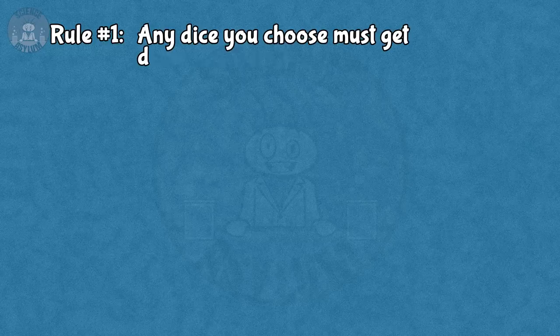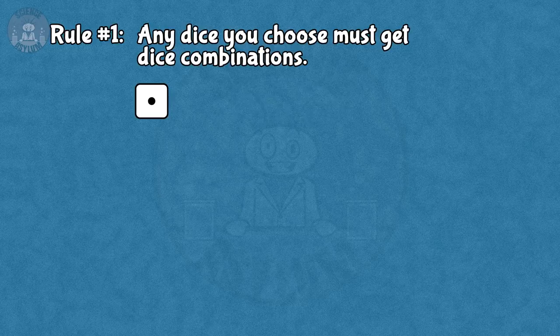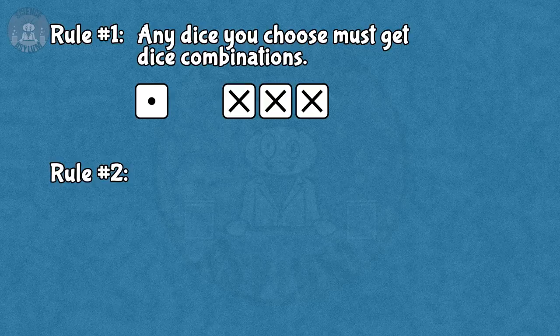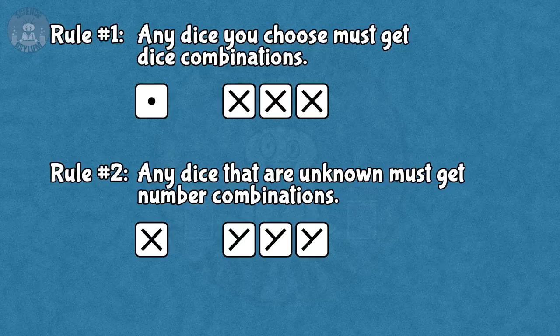The game of Farkle doesn't start with two dice or three dice though. It starts with six. We need to be really careful with the combination rules if we have that many dice. Rule number one. Any dice you choose must get dice combinations. That includes specific dice that are chosen and dice that are grouped. Unknown ungrouped dice don't need a dice combination because you're not choosing them. You're leaving them be. Rule number two. Any dice that are unknown must get number combinations. Groups of unknown dice only need one number combination for the whole group. Keep these rules in mind as we try six dice.